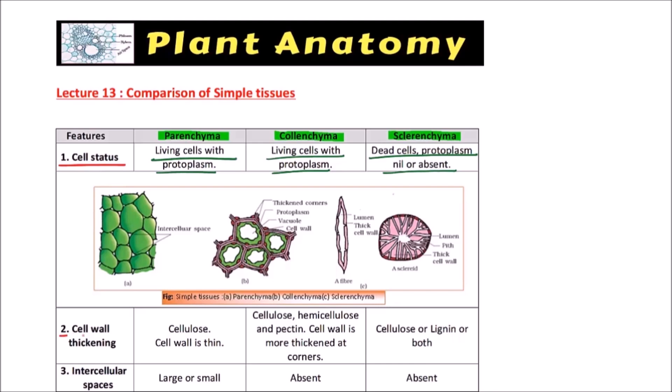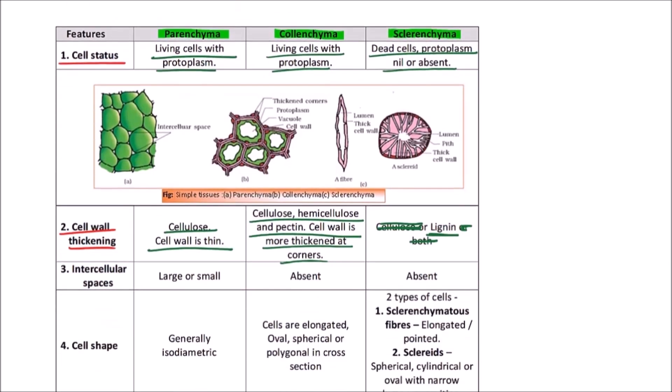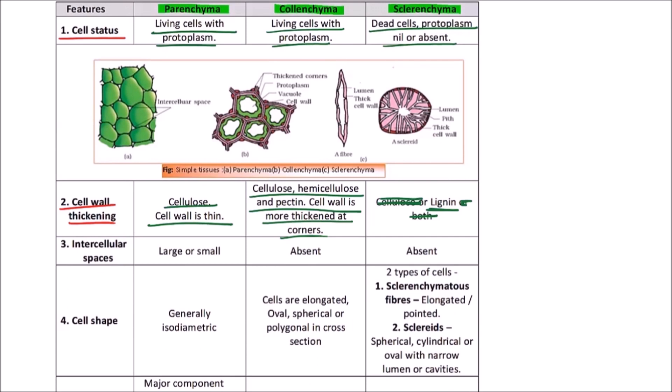Then cell wall thickening. Cell wall thickening is made up of cellulose and cell wall is thin in case of parenchyma cells. In collenchyma, cellulose, hemicellulose, and pectin is found in the cell wall and the cell wall is more thickened at corners. Then finally, sclerenchyma. The sclerenchyma is lignified and it is also having the cellulose, so lignified thick-walled cells are found in sclerenchyma.